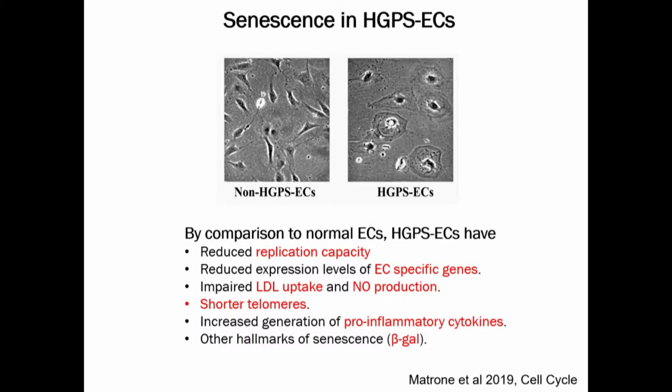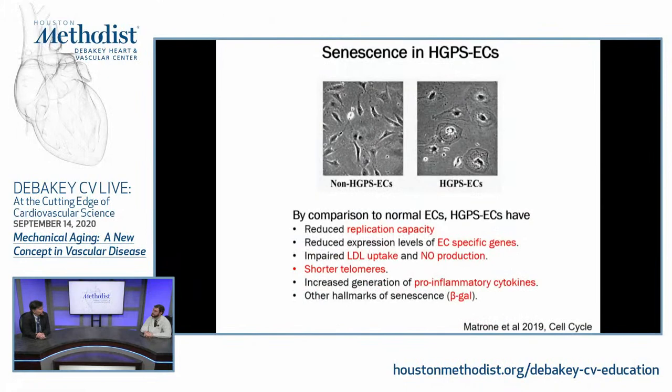The endothelial cells from the children are very different. They have reduced ability to replicate — you can see fewer cells on the right side. They express less of the endothelial-specific genes like VE-cadherin. They make less nitric oxide, are not as good at taking up LDL, and have shorter telomeres. There's telomere erosion in this condition, and they have the SASP phenotype — Senescent Associated Secretory Phenotype — generating a lot of inflammatory cytokines and other hallmarks of senescence like beta-galactosidase expression. Comparing the left slide to the right, they look abnormal — flattened, like fried eggs.